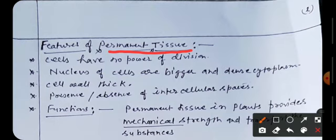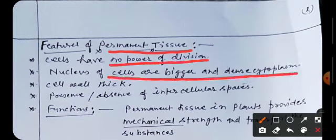The permanent tissue formed of the cells which have no power of division. The nucleus of the cells are bigger and dense cytoplasm are present in their cells. The cell walls of these cells are thick. There may be presence or absence of intercellular spaces.